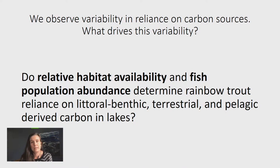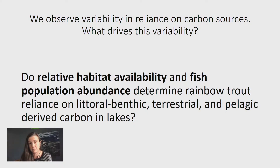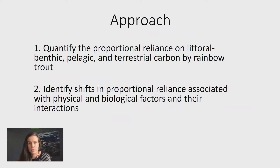So we observe variability in reliance on carbon sources. My question hones in on that: does relative habitat availability and fish population abundance determine rainbow trout reliance on littoral benthic, terrestrial, and pelagic-derived carbon in lakes? Specifically, I'm looking at two categories of factors for relative habitat availability: littoral extent and terrestrial extent around the lake. My approach was to first quantify the proportional reliance on littoral benthic, pelagic, and terrestrial carbon by rainbow trout, and second, identify shifts in reliance associated with physical and biological factors and their interactions.